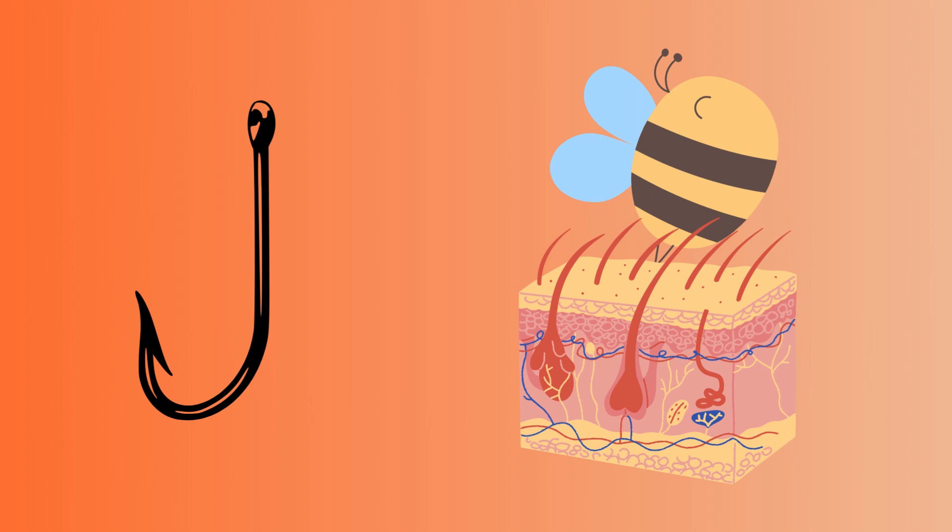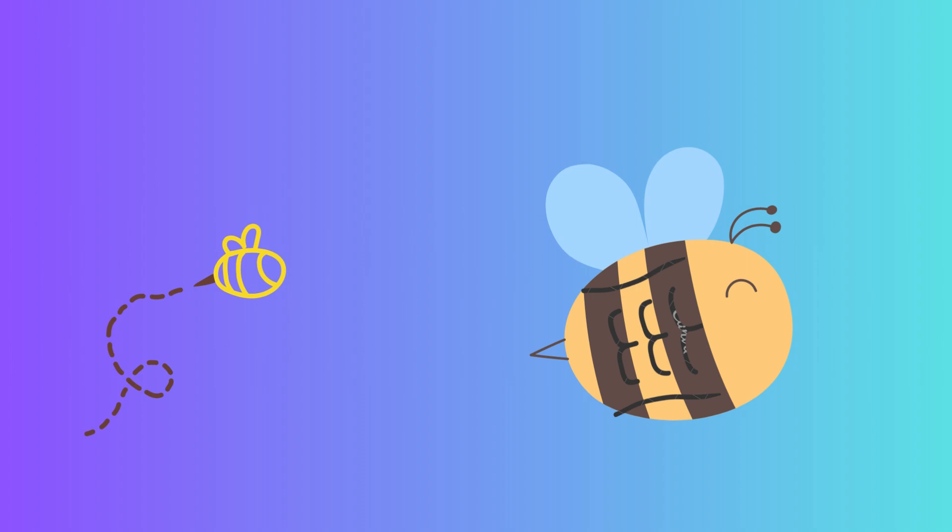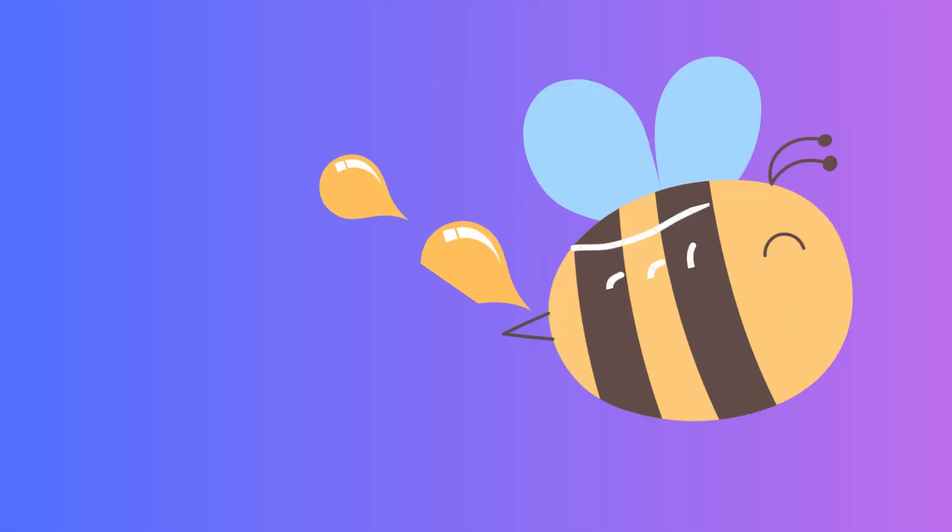These barbs are hooked, causing the stinger to get stuck in the target's flesh. When the bee tries to fly away, the muscles in its abdomen and attached venom sac continue to pump venom.